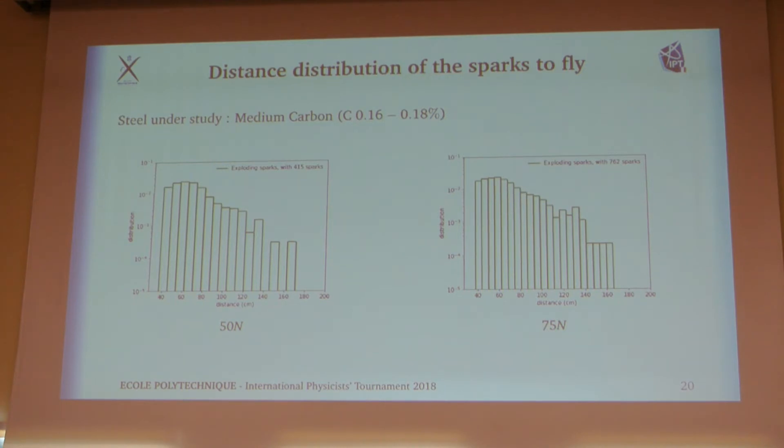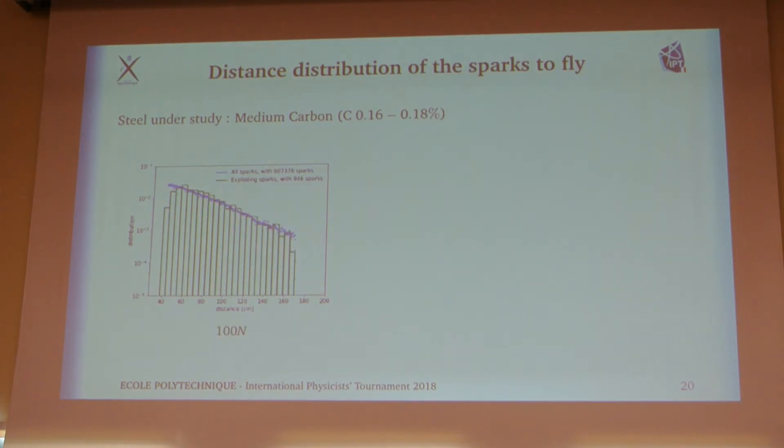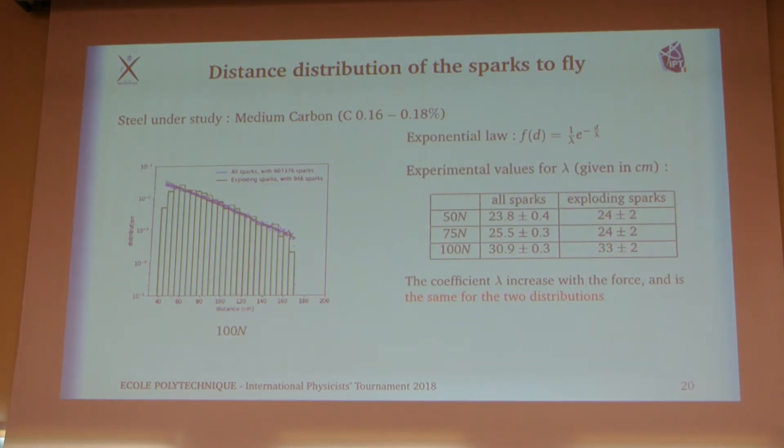This is the distribution of the distance traveled by the sparks from the grinder. It is in logarithmic scale for the ordinates. We can see that it aligns pretty well, so the distribution might be an exponential one. Also, if we take over the overall distribution of sparks at a given time, we can see that these two distributions are quite the same. It is even more impressive for the 100 Newton experiment because there are more data. With uncertainties, we also see that the two distributions are the same. Having these two distributions the same means that the explosion of sparks is random.